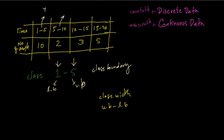Similarly, 10 minus 5, 15 minus 10, and 20 minus 15 give the class widths for the remaining classes.